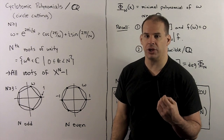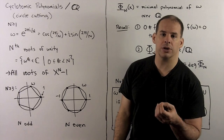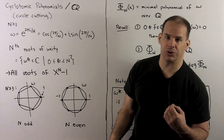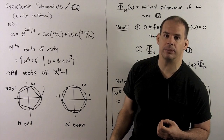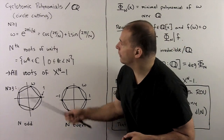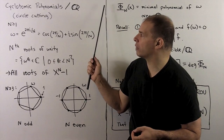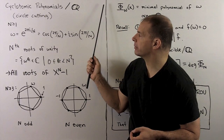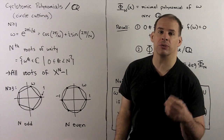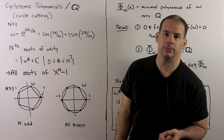Here's an important application of our theory. This example is very interesting in its own right. The problem: we want to find the cyclotomic polynomials over the rationals. So these are the minimal polynomials of roots of unity over Q.